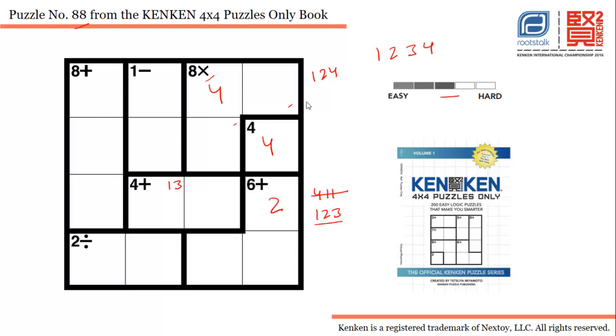If 2 is already there, that means 2 cannot be used here. 1 is the only possible option and then 2 here.